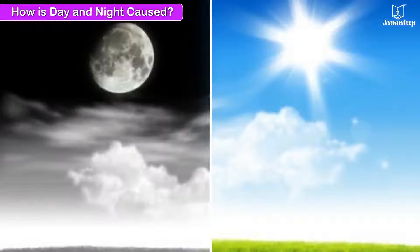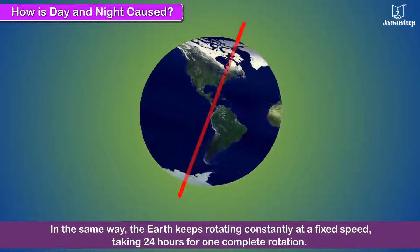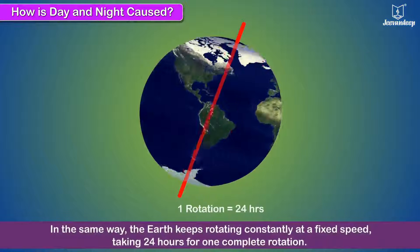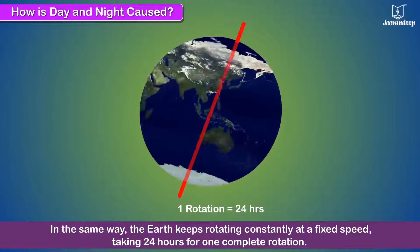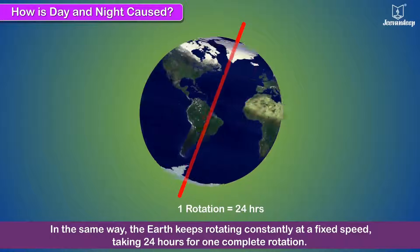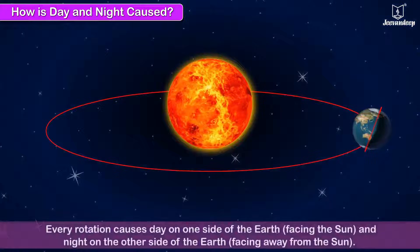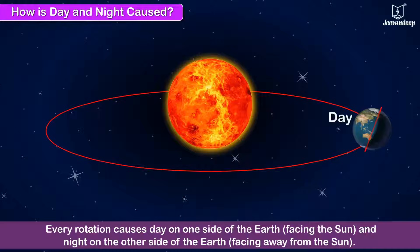How is day and night caused? The Earth keeps rotating constantly at a fixed speed, taking 24 hours for one complete rotation. Every rotation causes day on one side of the Earth facing the Sun and night on the other side of the Earth facing away from the Sun.